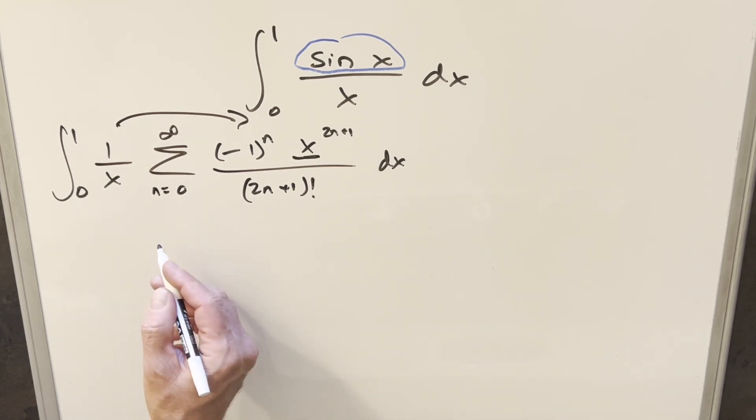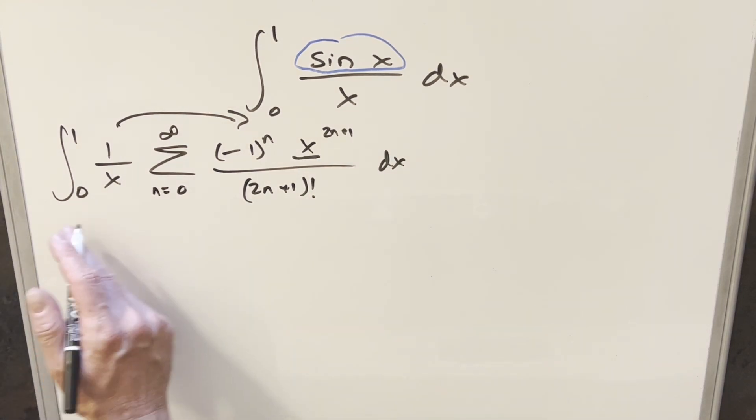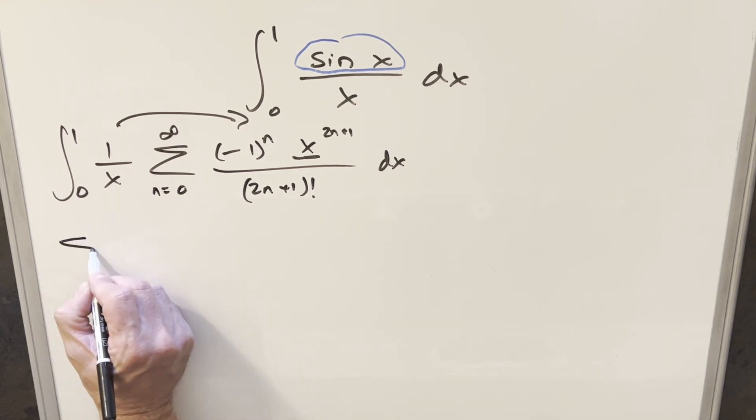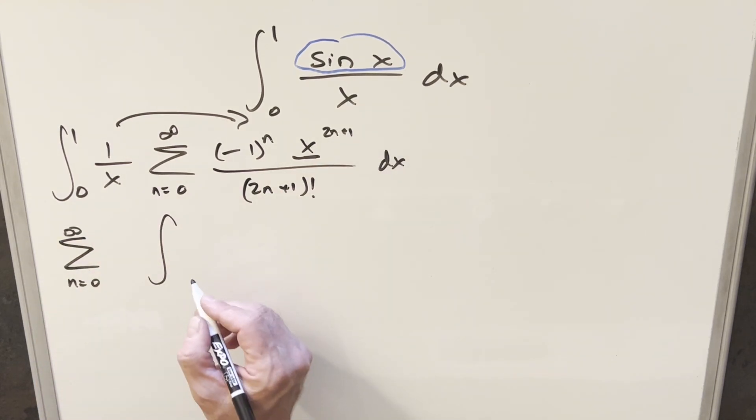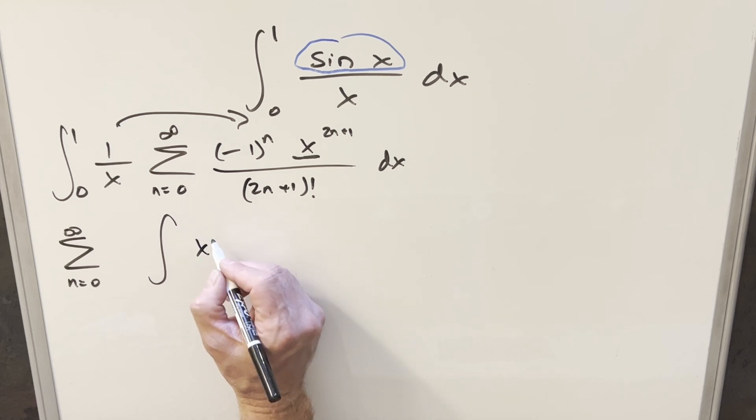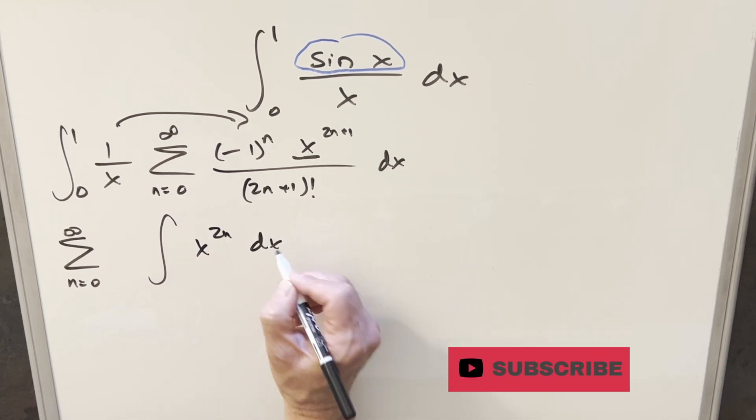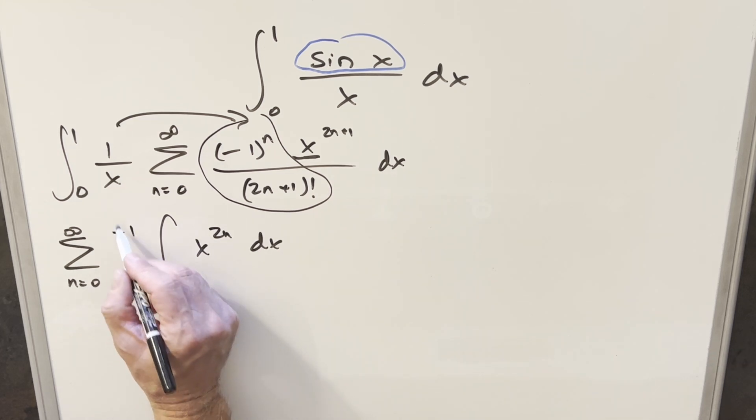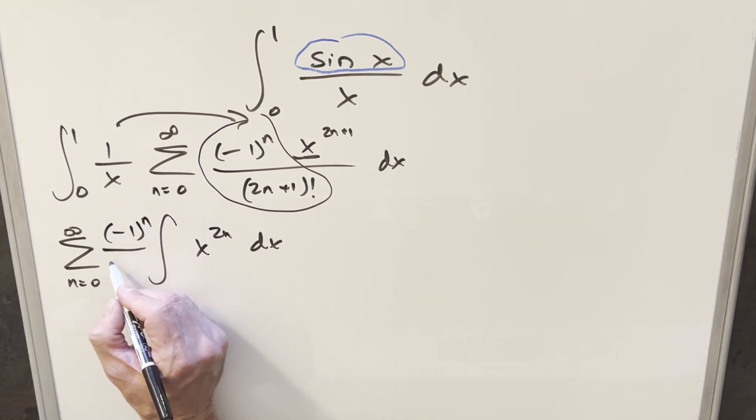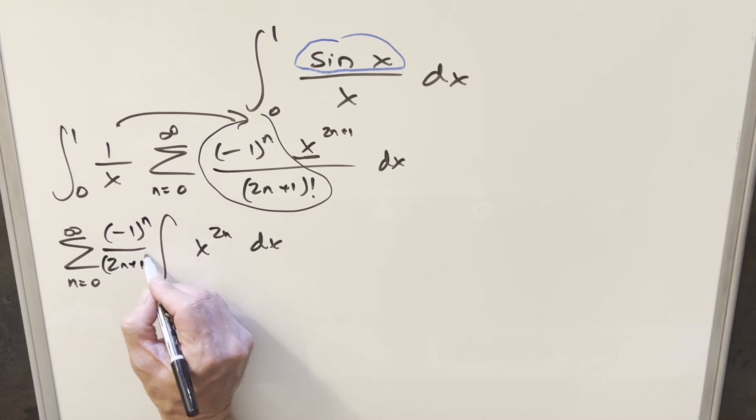And then what I can do is multiply in the 1 over x and update that. Also, I can swap the series with the integral so we're going to integrate this thing. We'll bring the series to the outside, and multiplying 1 over x times x to the 2n plus 1, we can write this as x to the 2n dx.